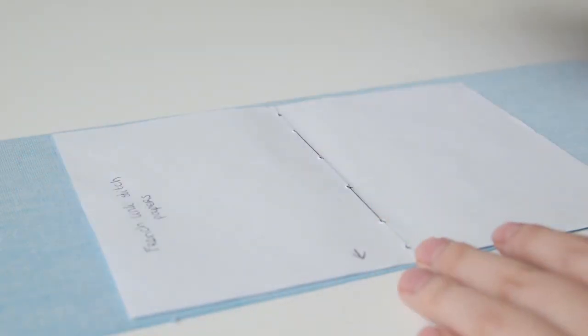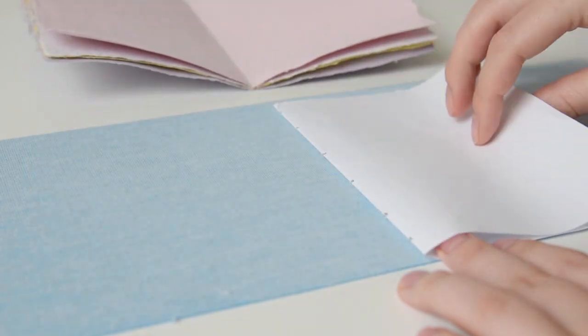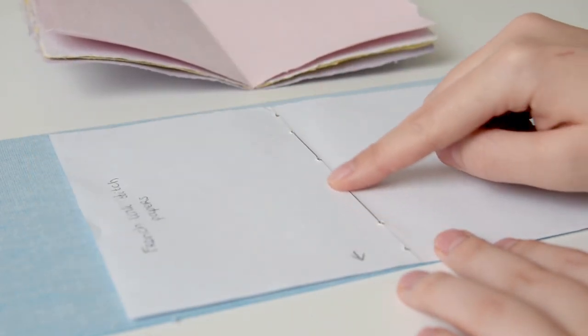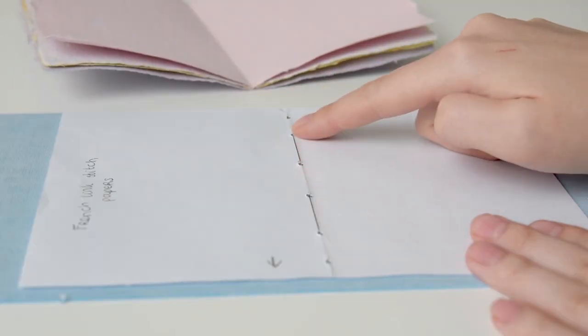You want to get a sheet of scrap paper and make this the size of your paper. Fold this in half exactly like you did with your pages, because the fold of that page will be where you are putting your markers for the holes.